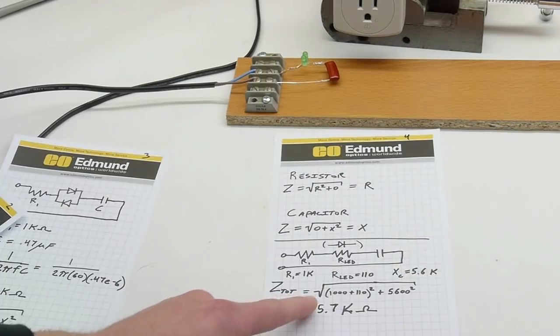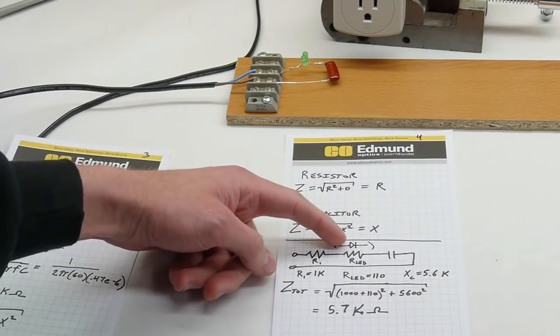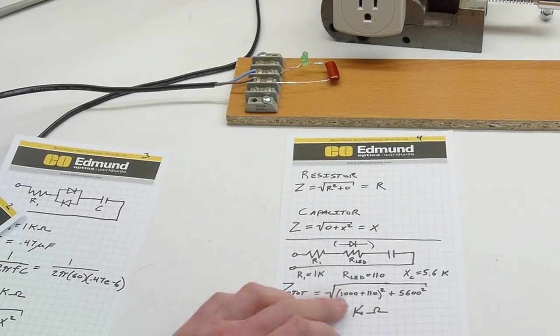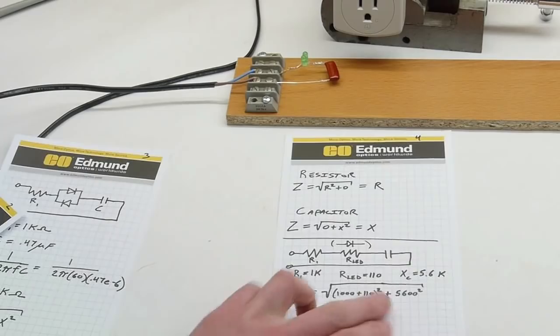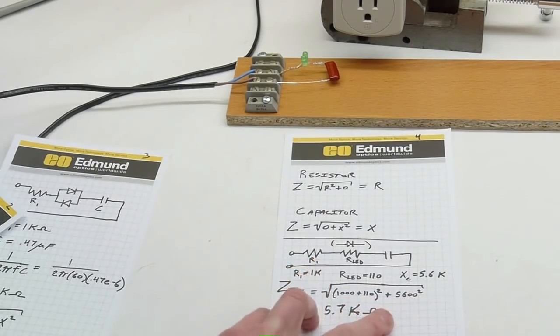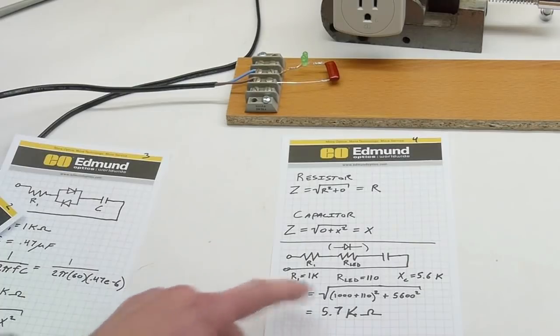We're going to approximate the resistor with a 110 ohm resistor. So we've got 1k plus 110 squared plus 5600 squared, and take the square root of that. So the entire impedance for the whole circuit is 5.7 kilo ohms.